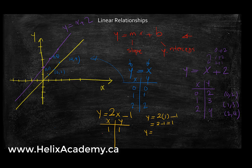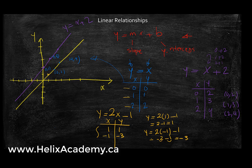Let's give x a negative 1. So I have 2 times negative 1 minus 1. That's negative 2 minus 1, which equals negative 3. In order to graph a line, I only need 2 points. So I have the point 1 and 1, and then negative 1 and negative 3.